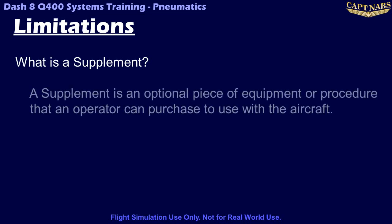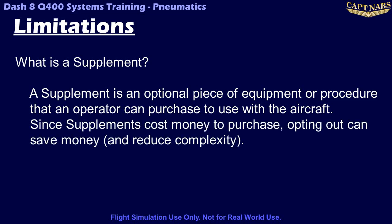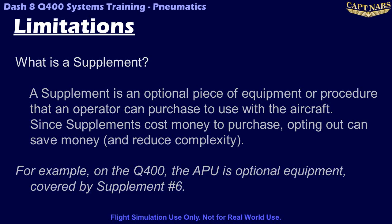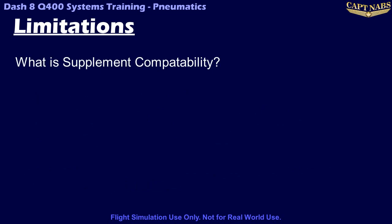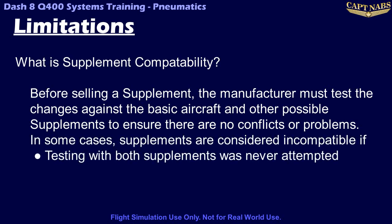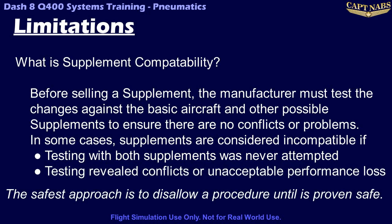A supplement is an optional change to the aircraft flight manual that an operator can purchase from the manufacturer. It can amend part of the aircraft flight manual for optional equipment or different procedures. Not every operator needs every option, so they don't need to pay for options they don't require, and some are certainly more popular than others. For example, did you know that on the Q400 the APU is actually an optional piece of equipment covered by supplement number 6? Of course, every Q400 delivered has had the optional APU included. This is important because of supplement compatibility. As more supplements are developed, they have to be tested against the other supplements that already exist to ensure they are compatible and can be used at the same time. In some cases, certain supplements were never tested together and thus cannot be approved for use together. In other cases, they may cause conflicts or too much loss of aircraft performance when combined. So it is important to keep track of which supplements are compatible and which are not.